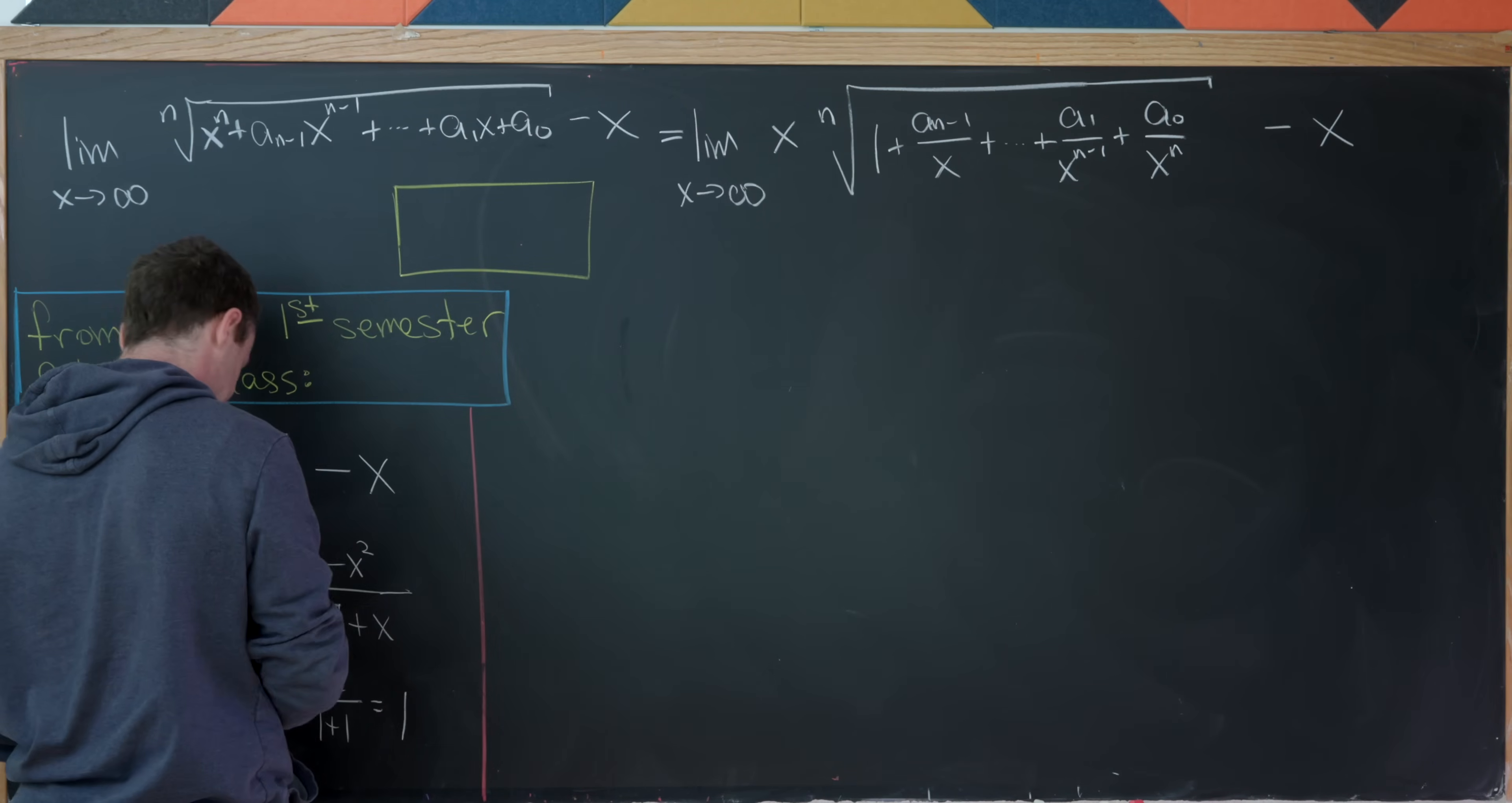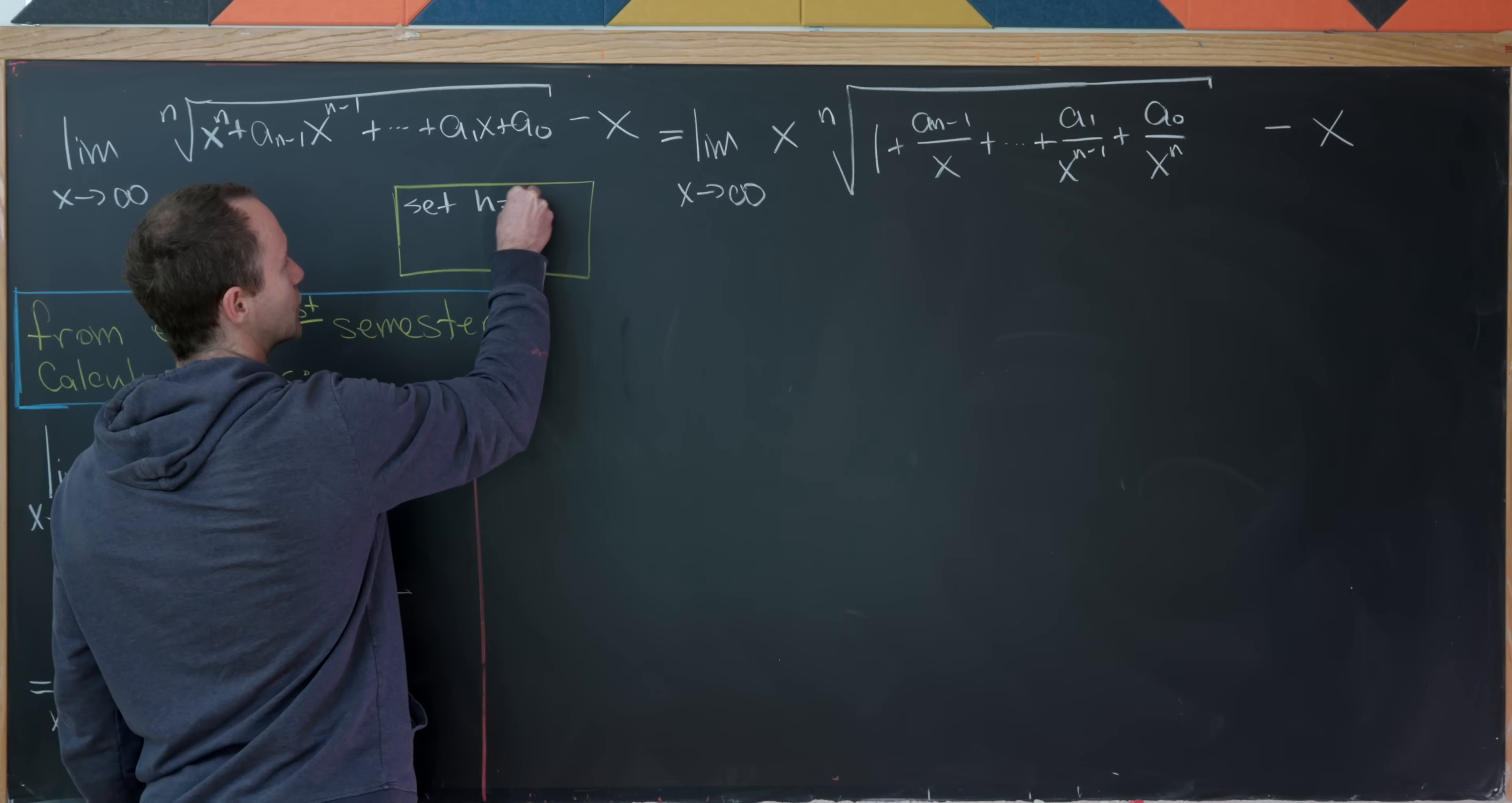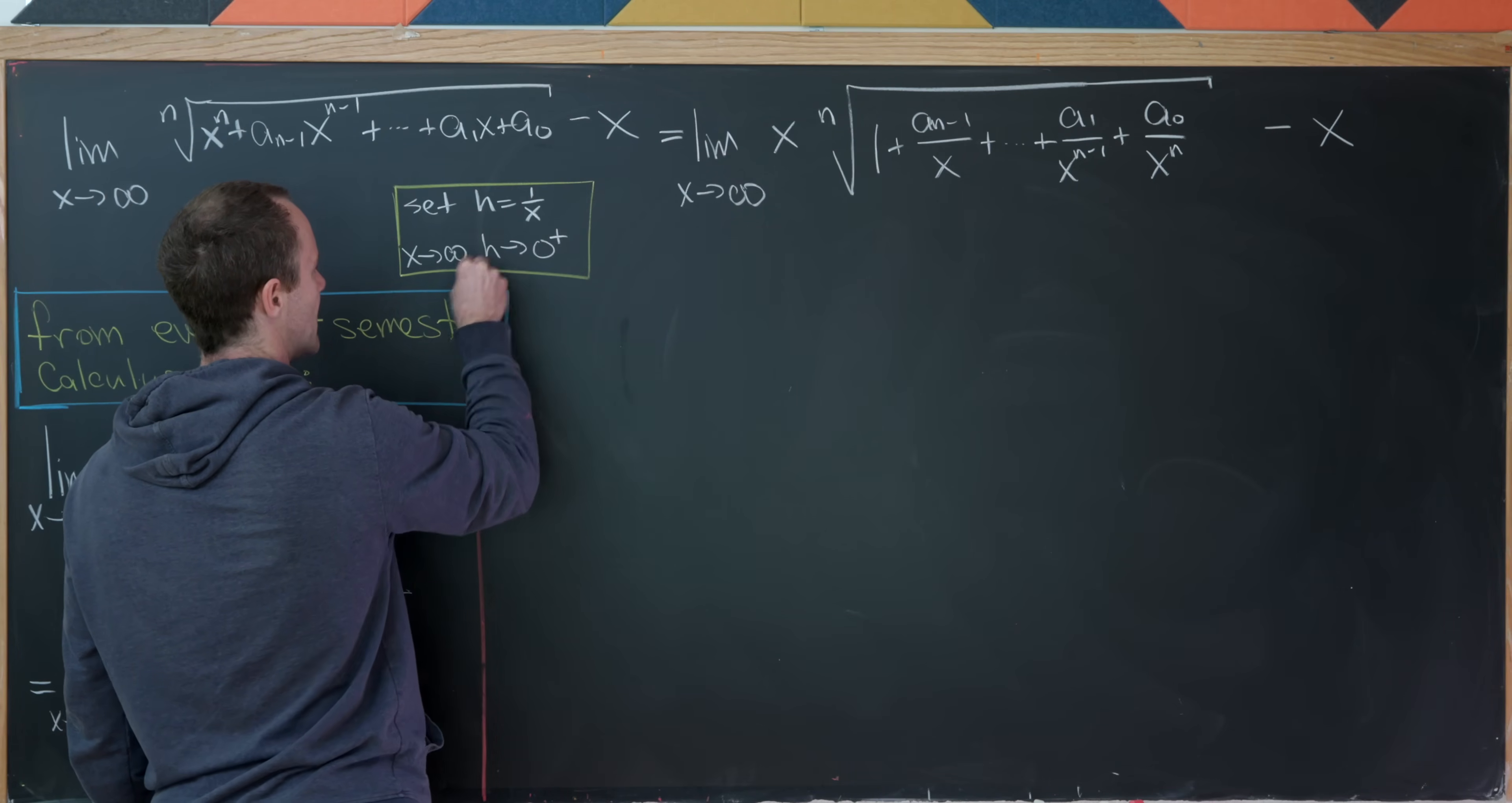So let's maybe spell that out real quick. So we'll do that in this yellow box. If we set h equal to 1 over x, notice as x goes to infinity, h goes to 0 from above.